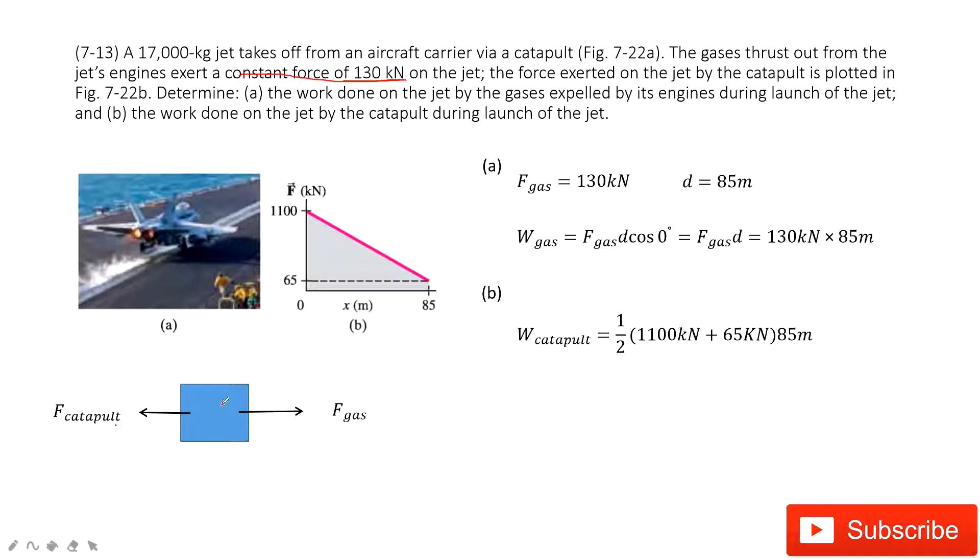Super easy, because we know the gas force and we know the displacement it moves forward. In this way, the work is just the force times displacement times cosine theta. This theta is zero because both of them are pointing forward. So in this way, we get the final answer.